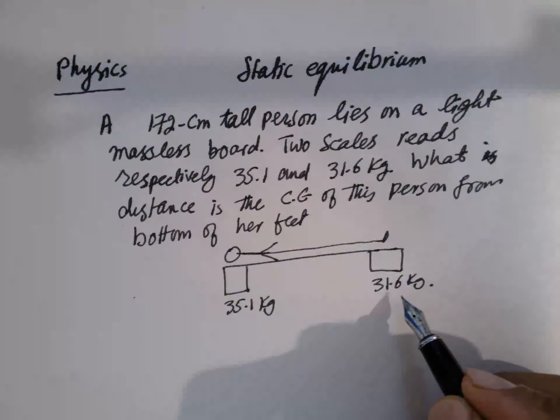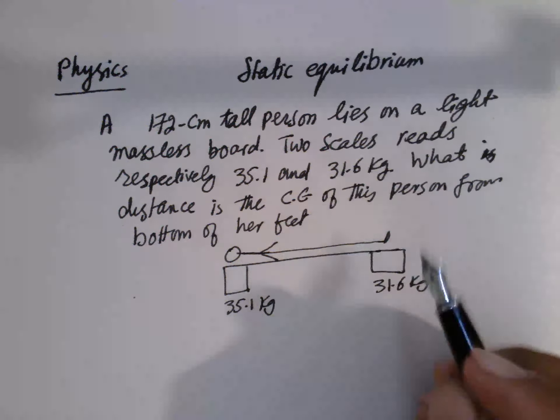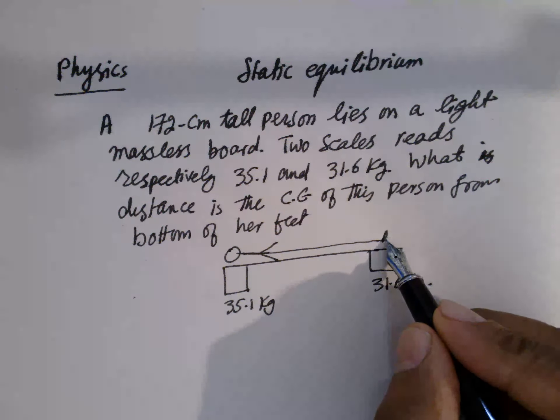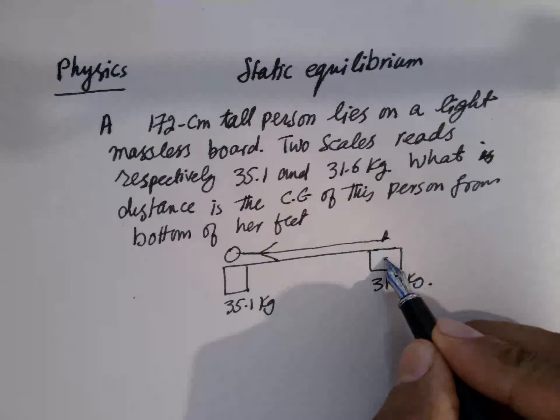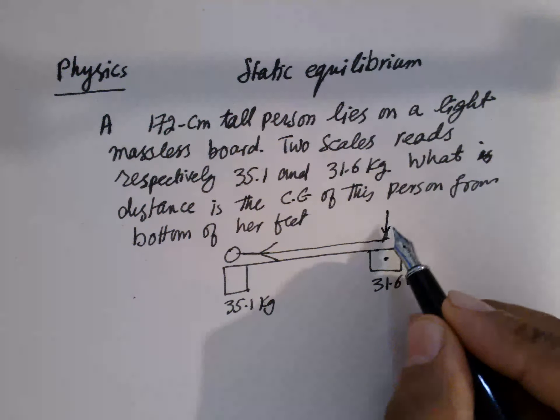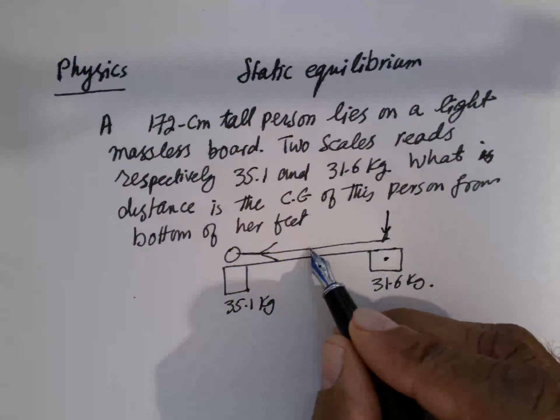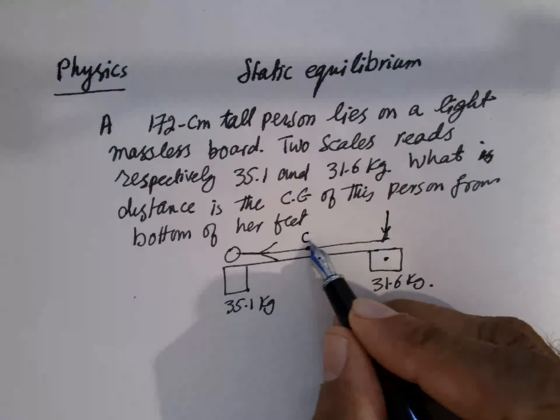What distance is the center of gravity of this person from the bottom of her feet? And so our feet are here. So from here, this is the zero. From where is the center of gravity, Cg?